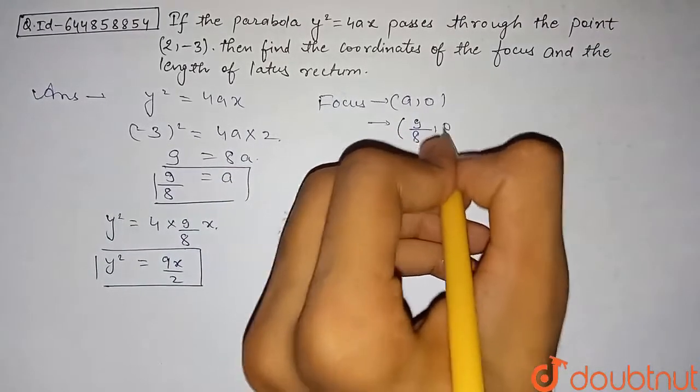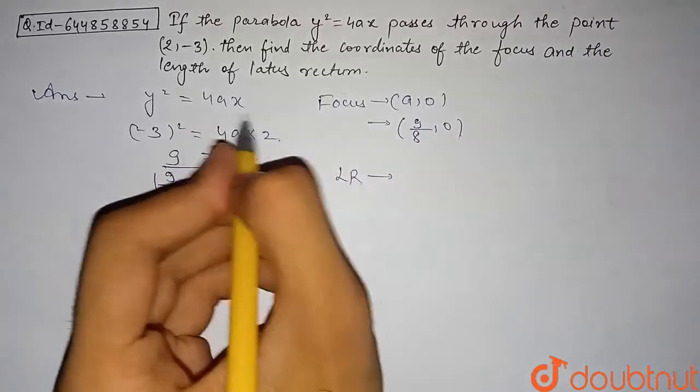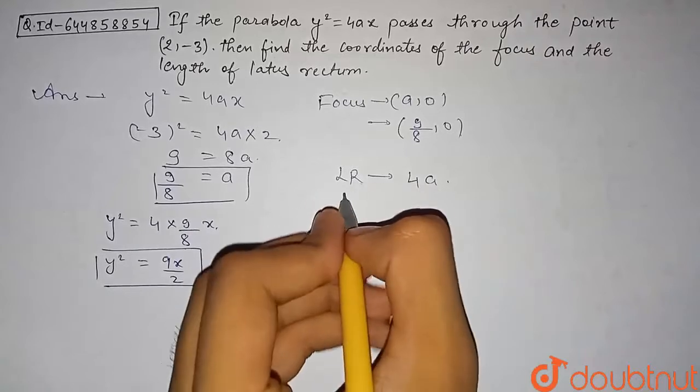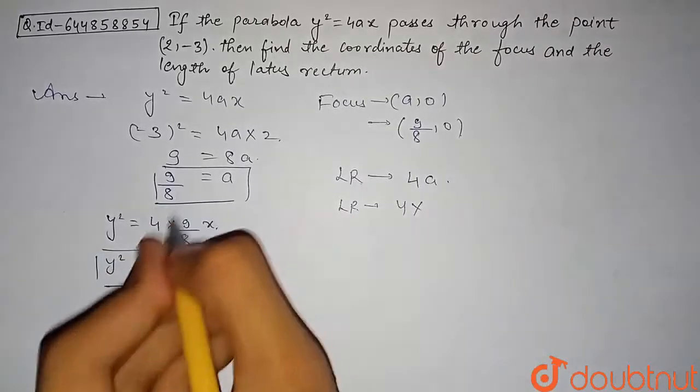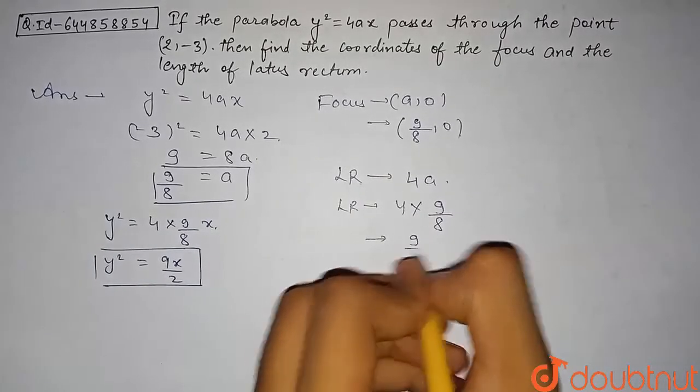Now the length of latus rectum for this general parabola will be given by 4a. So for our parabola, latus rectum will be equal to 4 × 9/8, and this will come out to be 9/2. So this is the latus rectum.